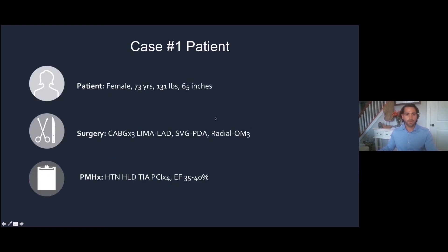Let's talk about some cases. The first case, we're going to talk about the operating room and continuum of care into the ICU. This is a 73-year-old female, past medical history of hypertension, hyperlipidemia, TIAs, four stents in the past, and an ejection fraction of 35-40%. She underwent a CABG times three.